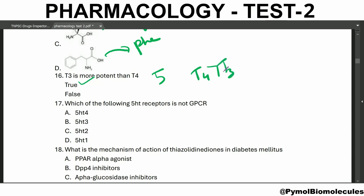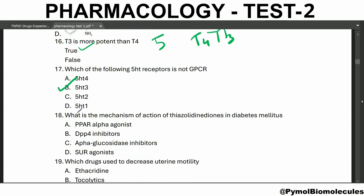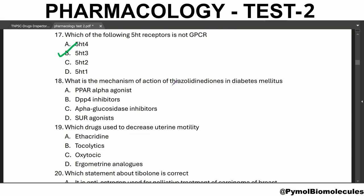Which of the following 5-HT receptors is not a GPCR receptor? The answer is 5-HT3. What is the mechanism of action of thiazolidinediones in diabetes mellitus? The mechanism of action is PPAR-alpha agonist.